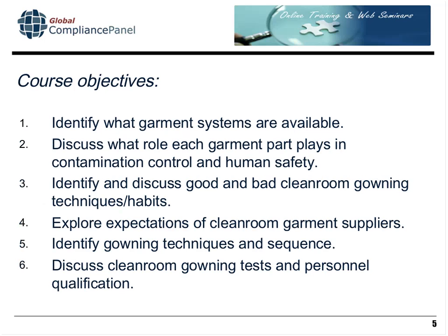Our objectives: first, we'll identify what garment systems are available for those working in or responsible for a controlled environment. We'll discuss what role each garment plays in contamination control and human safety, as there are two different roles. We'll identify and discuss good and bad cleanroom gowning techniques and habits — it's not just about having the right tools, but knowing how to use them. We'll explore supplier expectations for cleanroom garments, identify proper gowning sequences, and discuss cleanroom gowning tests and personnel qualification to ensure people are doing what they're supposed to do.